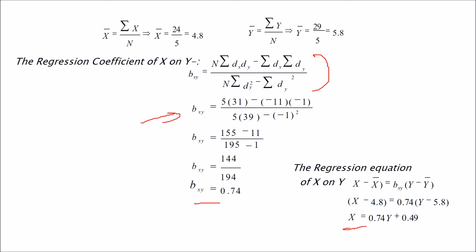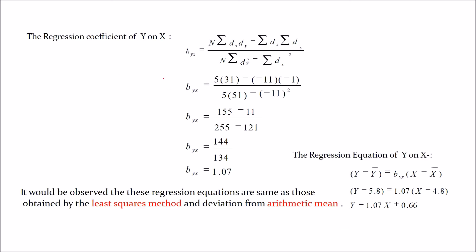And you get BXY and BYX. And just place the value. This is the regression of X on Y. This is the regression of Y on X. So this same equation has come up. So we have observed that the regression equations are same for direct method, that is the least square method, the arithmetic mean, and now the assumed mean method.